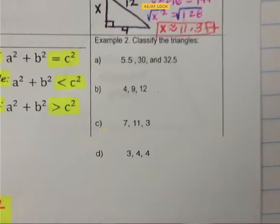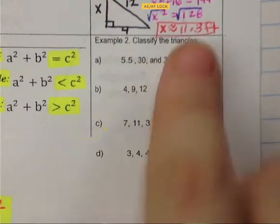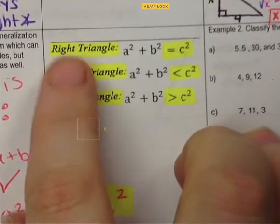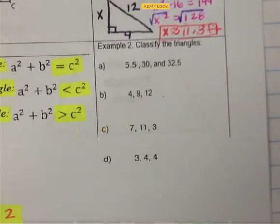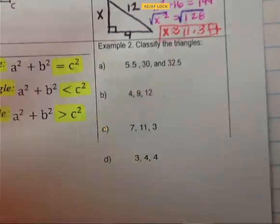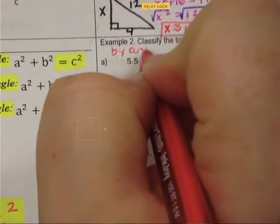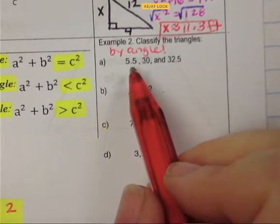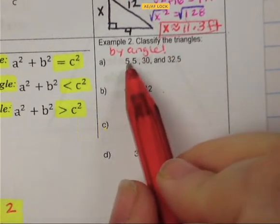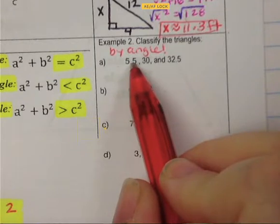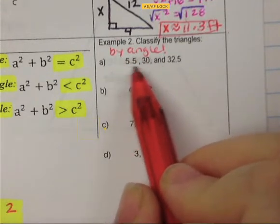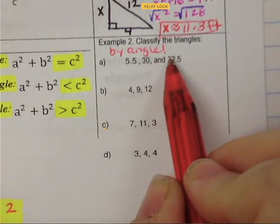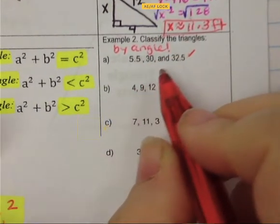We have four examples to classify triangles by angle type (right, acute, or obtuse). Example A: first determine if it's a triangle. The two smaller sides are 5.5 and 30. 5.5 plus 30 is 35.5, which is bigger than 32.5 — check mark. So we can proceed to determine the type.